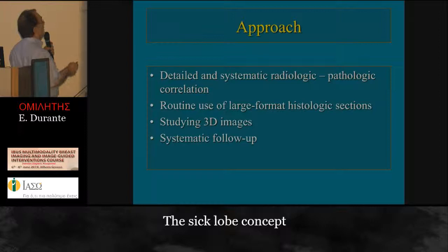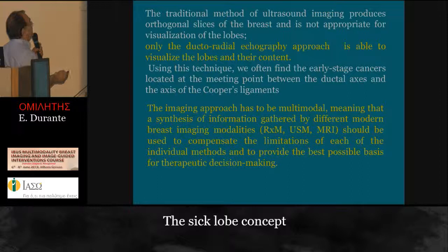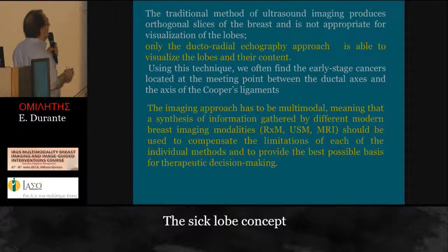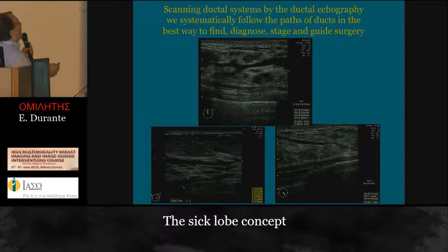The project title is the systematic radiology-pathological relation: routine use of large-format histology sections for studying 3D images and systematic follow-up. The traditional method of ultrasound imaging produces octagonal slices of the breast and is not appropriate for visualization of the lobes. Only the ductal radial echography approach is able to visualize the lobes and their contents. Using this technique, we often find the real-stage cancer located at the meeting point between the ductal axis and the axis of the Cooper's ligament. The imaging approach has to be multimodal — the synthesis of information created by different modern breast imaging modalities (mammography, ultrasound, and MRI) should be used to compensate the limitations of each individual method and to provide the best possible basis for therapeutic decision making. Scanning the ductal system by ductal echography, we systematically follow the paths of the ducts in the best way to find and diagnose early stage cancer and to guide surgery.